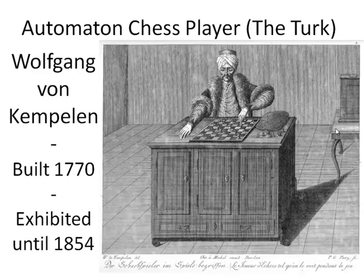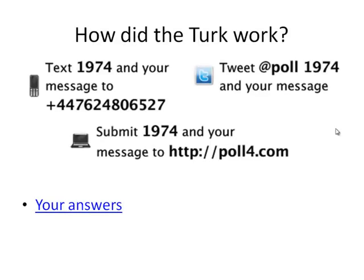And then we have the automaton chess player, also known as the Turk. This was built by Wolfgang von Kempelen. He built it in 1770, and it was exhibited until 1854. It was able to play at the level of a grand master — it didn't just play chess, it beat people at chess. Napoleon saw it; it was exhibited around Europe and seen by many grand heads of state. It was a wonder of its time, and reputably one of the inspirations for Charles Babbage's difference engine work.